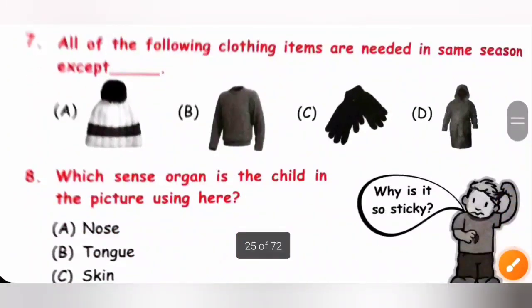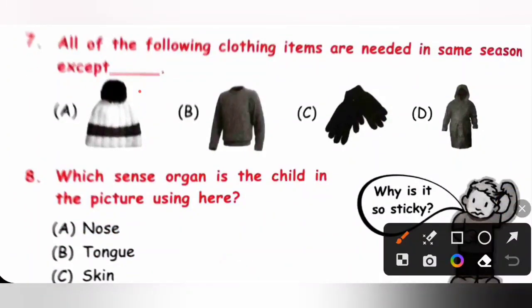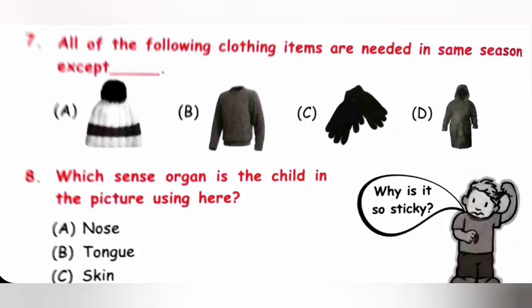Seventh one. All of the following clothing items are needed in same season except. So, woolen cap, sweater and gloves are needed in winter season. But, option D. Raincoat is needed only in rainy season. So, option D is the correct answer. All of the clothing items are needed in same season that is winter season except raincoat which is needed in rainy season. So, option D is the correct answer.